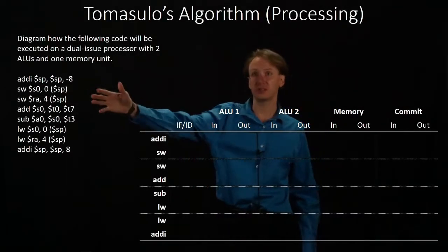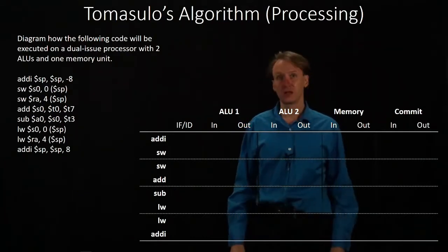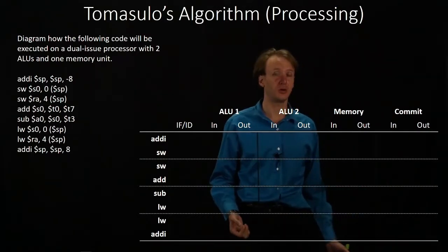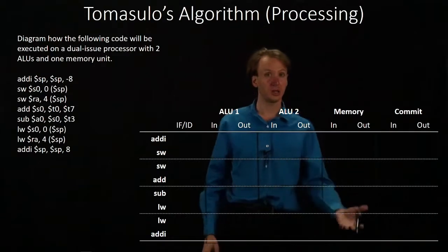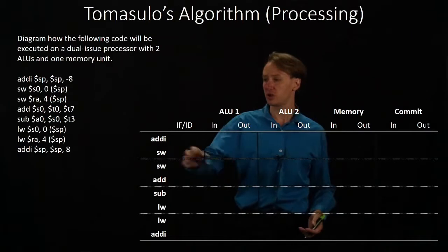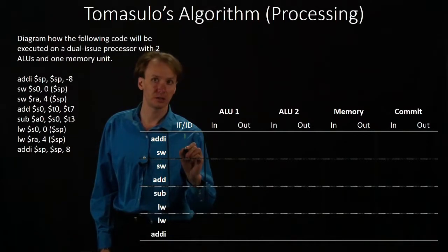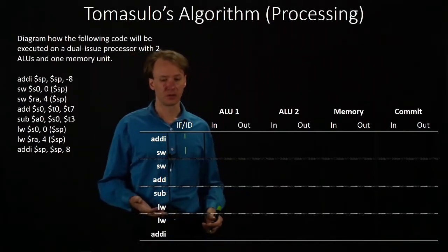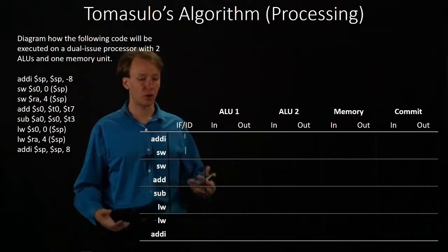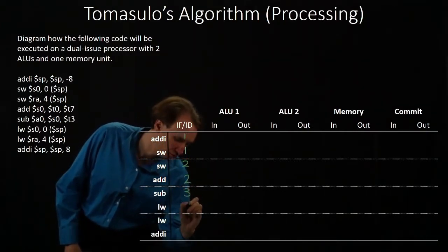In this example, we'll be looking at this set of code and seeing how it's going to be handled by Tomasulo's algorithm. As before, we can fetch two instructions every cycle and we can commit two instructions every cycle. We also have two integer ALUs and a load store unit to process our information. We'll start by pulling in two instructions, issuing two more each cycle.